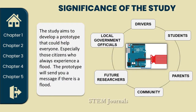For the significance of the study, this study aims to develop a prototype that could help everyone. For drivers: if there is a flood in a place they will pass, the prototype can help them avoid going into that area. For students, the prototype can help them prepare for floods and avoid accidents. For parents, the prototype can help determine if a flood is unsafe so they will not send their children into danger. For the community, the prototype can help them stay updated to prepare for worst-case scenarios. For future researchers, the study can support and guide their research.